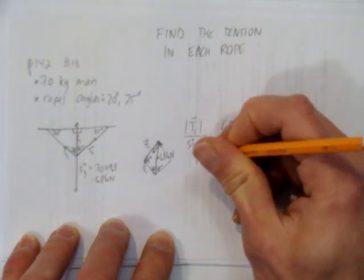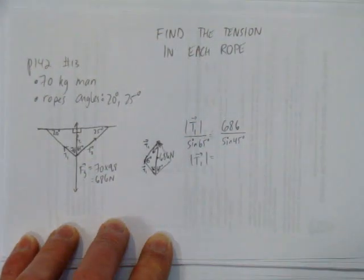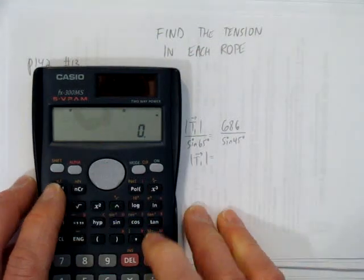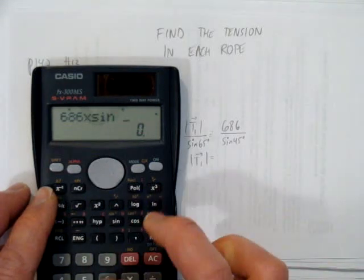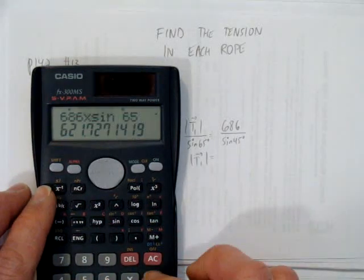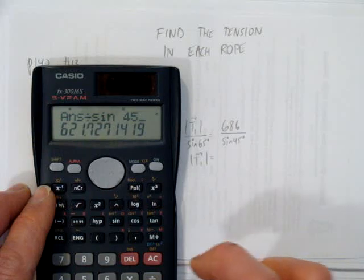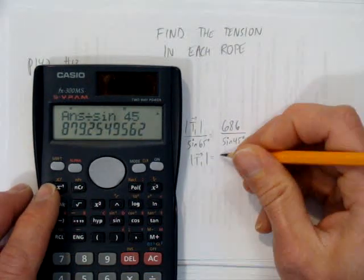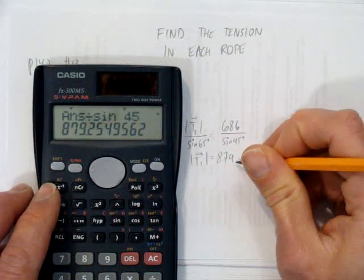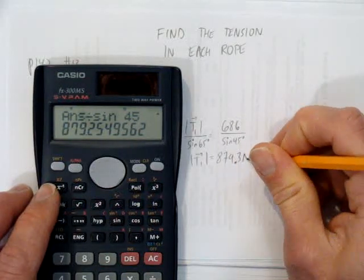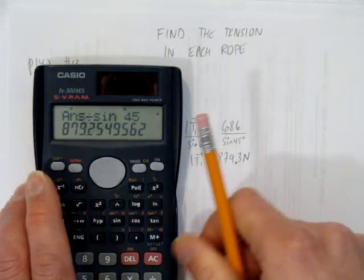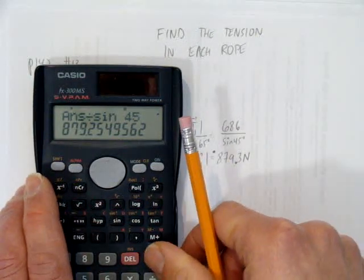And now I'm going to solve for the magnitude of T1 on my calculator all at once. By going 686 times sine of 65 divided by sine 45. And I get 879.3. We'll round to one decimal place. Newtons. Put a rounding dot. And there's my tension in the first rope.